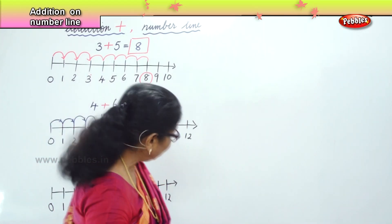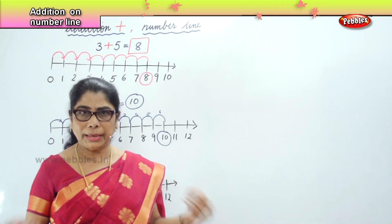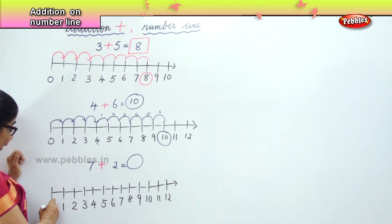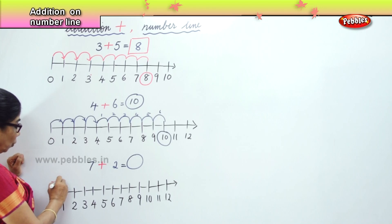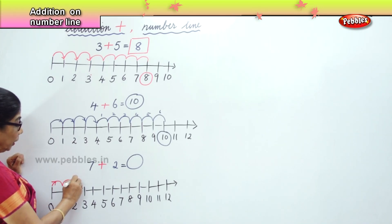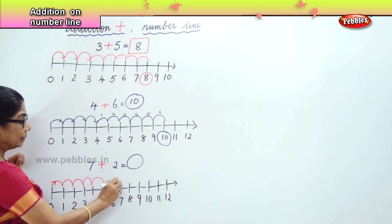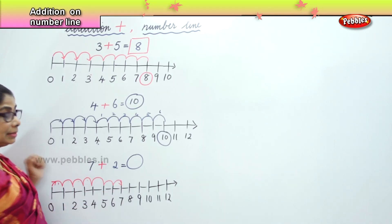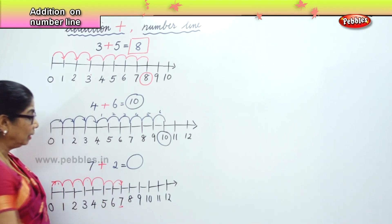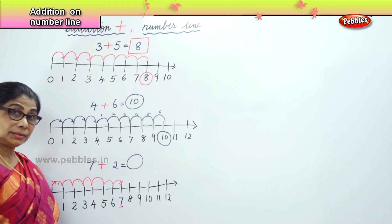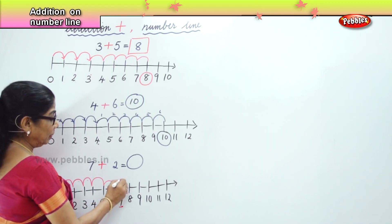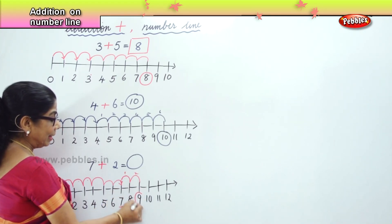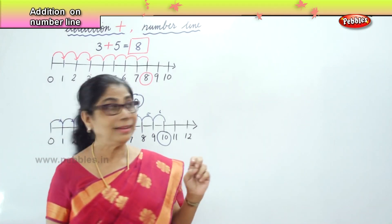Now look at the first number. We begin to jump from seven. Seven places you have to jump. We begin with zero — always you begin with zero. One, two, three, four, five, six, seven. So you have jumped seven places and the number is seven. Now you have to jump two more places. That is, from seven: one and two. And you get nine. What's your answer? Nine.